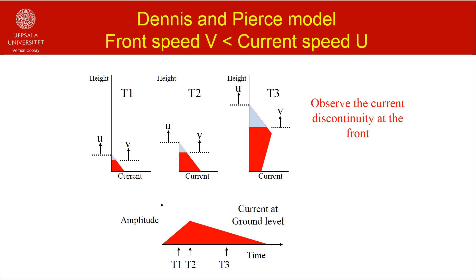Let us consider the case where the front speed is less than the current speed in the Dennis and Pierce model. In this case, the current will be chopped at the front, and as in the case of the water jet where the water splashes at the moving target, charges will be deposited along the return stroke channel. The chopping of the current at the return stroke front leads to a current discontinuity at the front. So at the front, charges will be deposited along the return stroke channel.